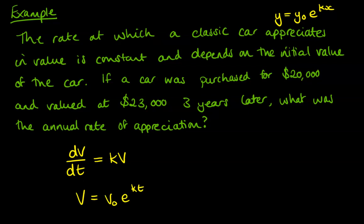So v is our value, v₀ is the initial value, t is the time, and k is that proportional constant, so in this case it's the interest rate, or rather rate of appreciation.